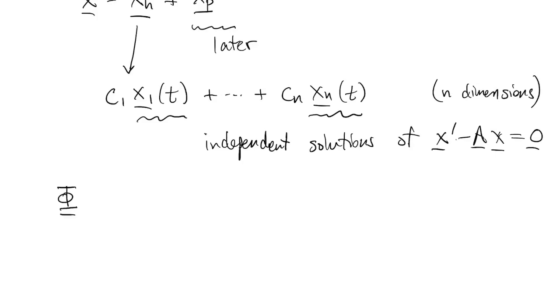We can also collect those independent solutions as columns of a matrix phi. Phi will end up being n by n. And remember this is called a fundamental matrix.